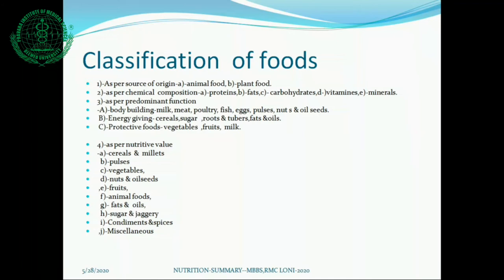As per the time of origin, foods are classified as animal foods and plant foods. Animal foods include milk and milk products, eggs, meat, and fish. Plant foods include cereals, pulses, vegetables, and fruits. A second classification is based on chemical composition into proteins, fats, carbohydrates, vitamins, and minerals.